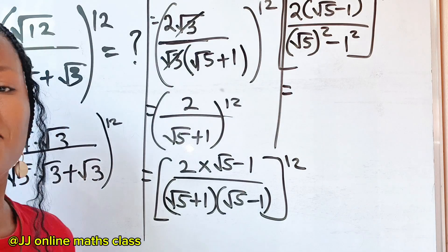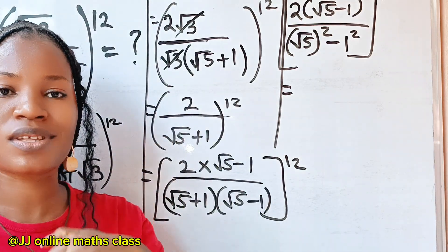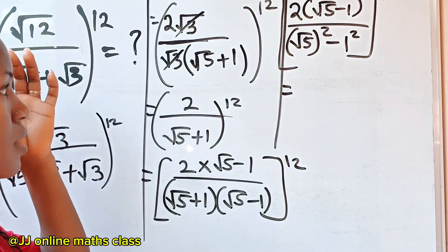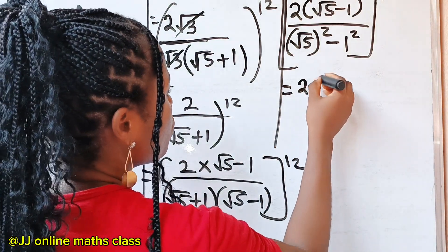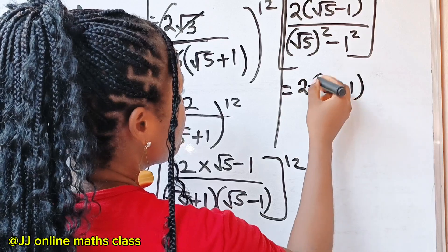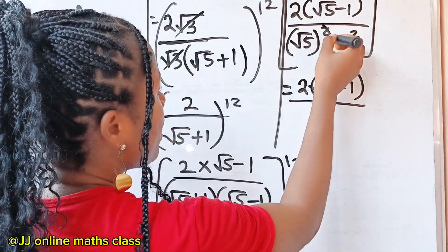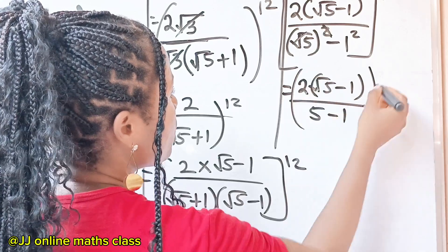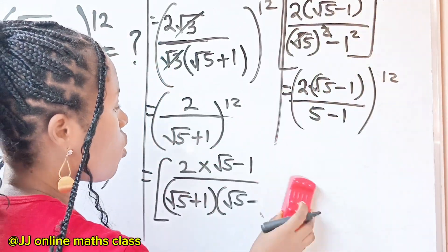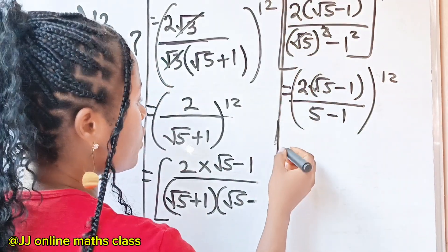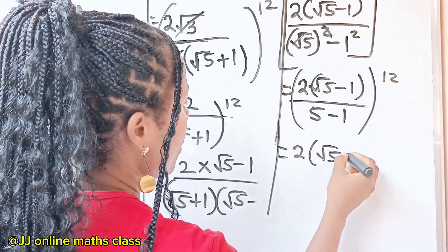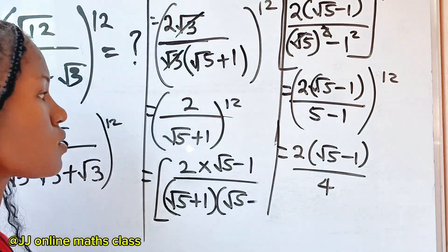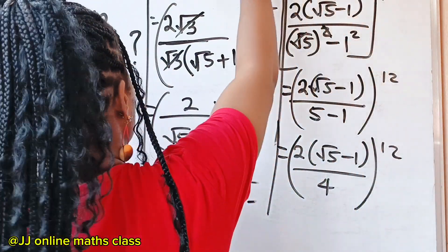We are still simplifying. We have 2(root 5 minus 1) divided by: root five squared is five, minus one squared is one, so five minus one is four. Everything raised to the power of 12. This is equal to 2(root 5 minus 1) divided by 4, raised to the power of 12.